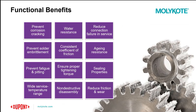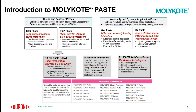So why choose a paste? A paste can be chosen to provide water resistance, easy non-destructive disassembly of components, sealing properties, and aging resistance, while also providing a consistent coefficient of friction and wide operating temperature ranges. Within our Molycote portfolio, we have a number of different pastes for different applications, identified as either thread and fastener pastes or assembly and dynamic application pastes.